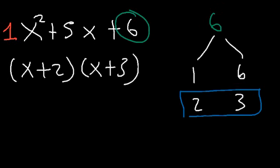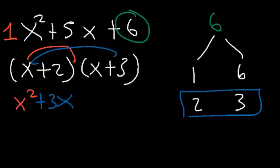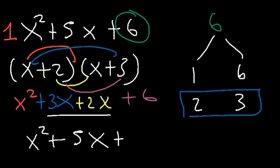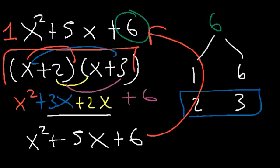Now if you FOIL it you can check your answer. x times x is x squared, x times 3 is 3x, 2 times x is 2x, and 2 times 3 is 6. If you add the two middle numbers, 3x plus 2x, that gives you 5x, so we get our original expression. That's a quick and simple way to factor a trinomial when the leading coefficient is 1.